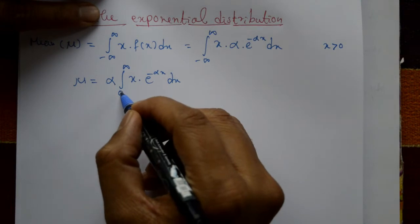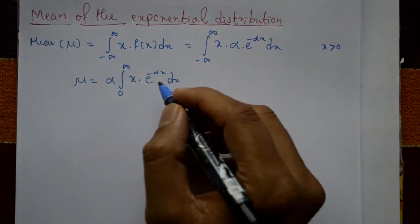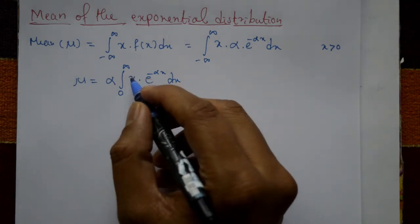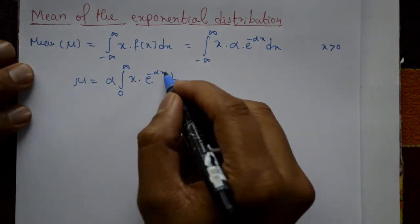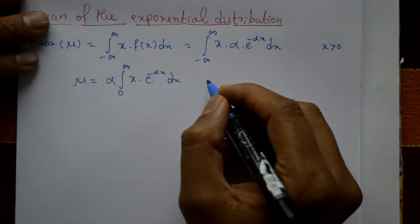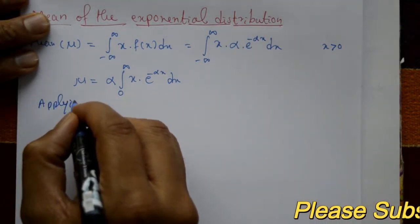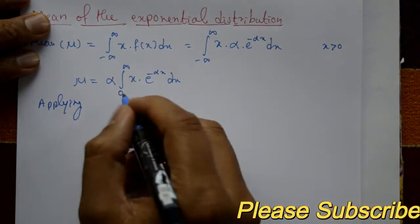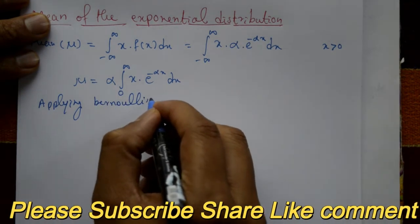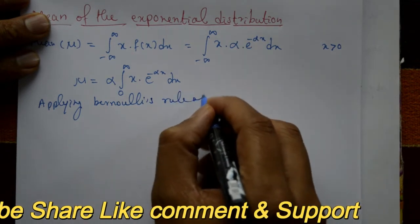This function is defined for x greater than zero, so the limits are zero to infinity. Now we apply Bernoulli's rule — since x is a polynomial and e raised to minus αx is an exponential, we apply Bernoulli's rule of integration by parts.